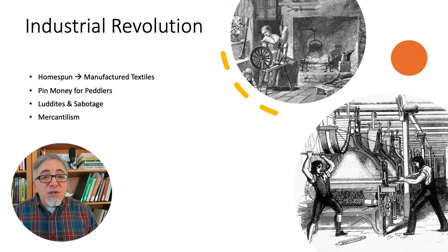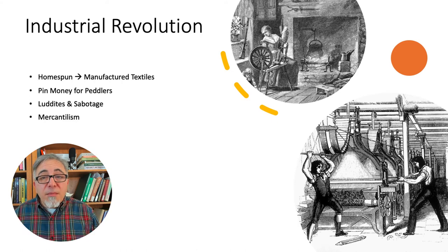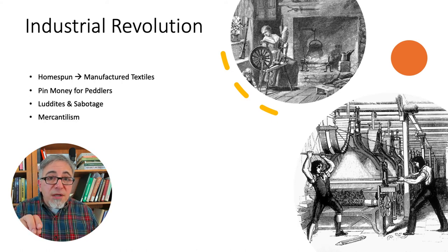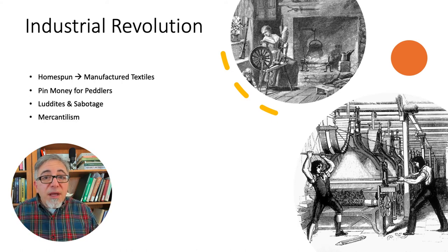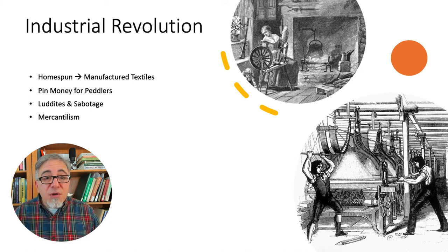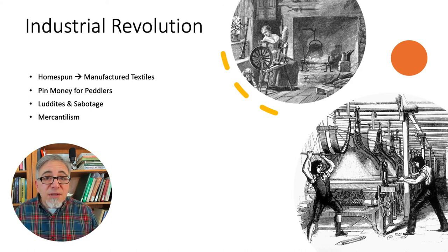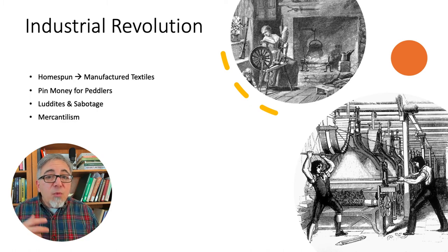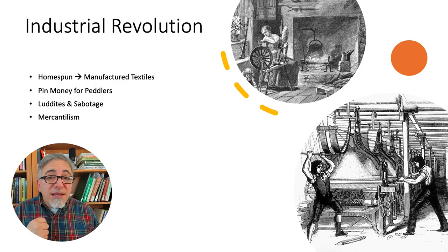Soon, British merchants were selling industrial products to continental Europe and to an increasingly important market of consumers in Britain's colonies. The ability to sell manufactured goods to a captive colonial market added to the rush for overseas empires by these European powers and by the United States and Japan in the 19th and early 20th centuries. Every nation wanted consumers for the products of the home country and wanted to lock up the valuable natural resources that were needed by the industries of the empire.